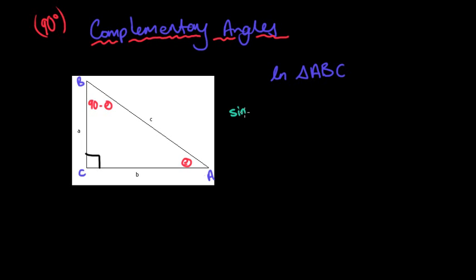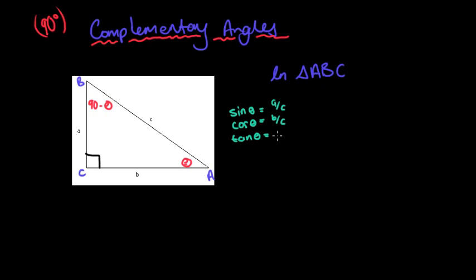I'm going to first look at sin theta, cos theta, and tan theta — this brings us back to SOHCAHTOA. For sin theta, it's opposite over hypotenuse, so it's a over c. For cos theta, it's b over c. For tan theta, it's a over b.